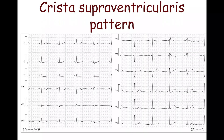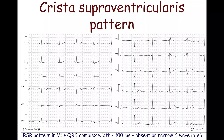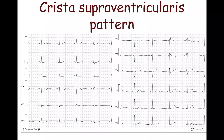The Crista supraventricularis pattern is similar to the incomplete right bundle branch block. However, in this case, the QRS complex width is less than 100 ms, and the S-wave width in lead V6 does not exceed 40 ms. The underlying cause is attributed to delayed depolarization of the Crista supraventricularis, a condition that manifests in healthy individuals.